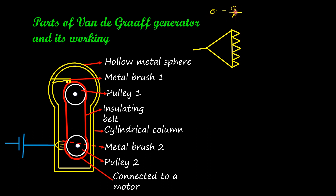At the tips of the bristles, charge density is much greater. When charge density increases, the potential also becomes very great. When potential increases, the air particles between the bristle tips and the dielectric belt — there is a small gap filled with air — start getting ionized.